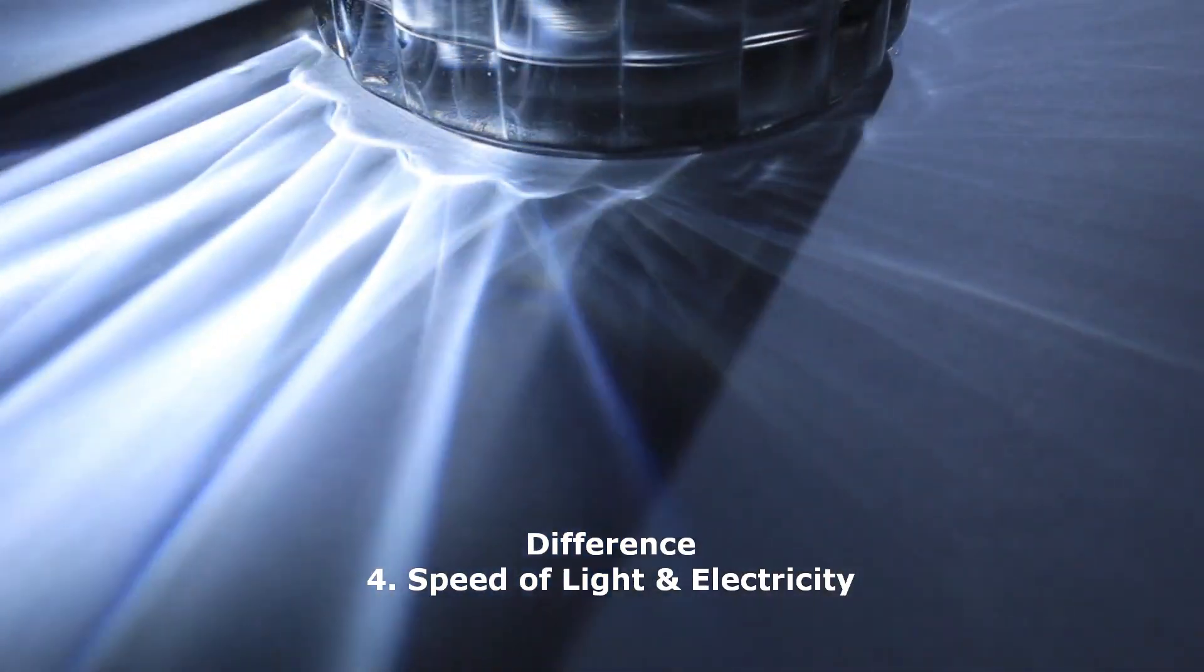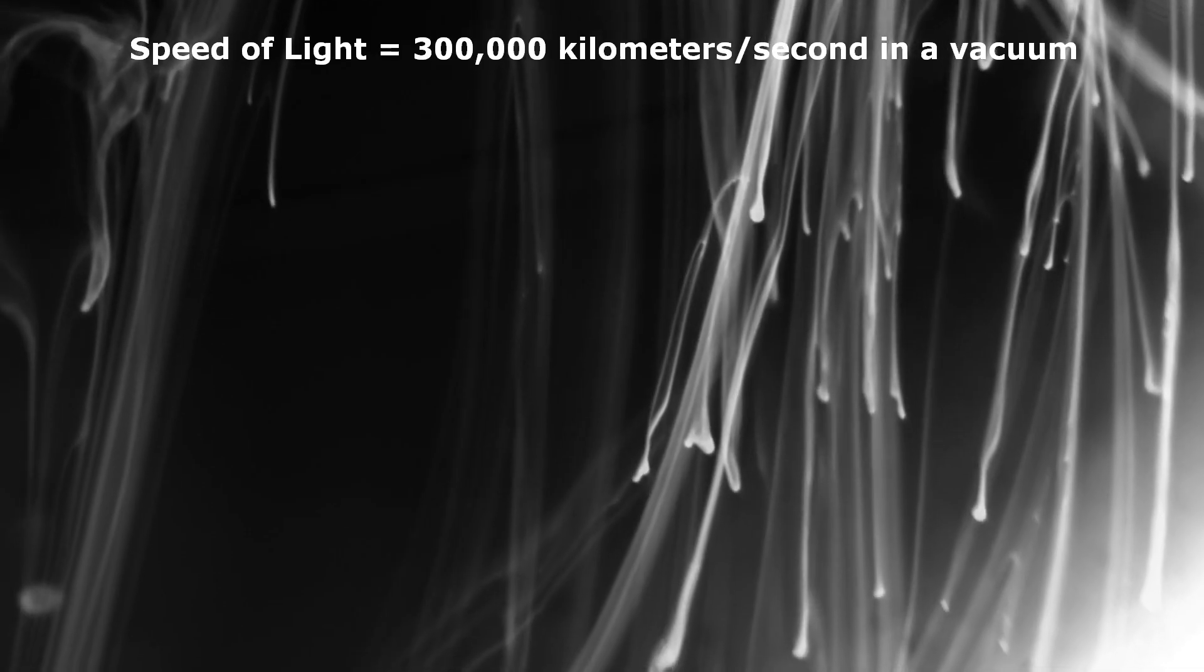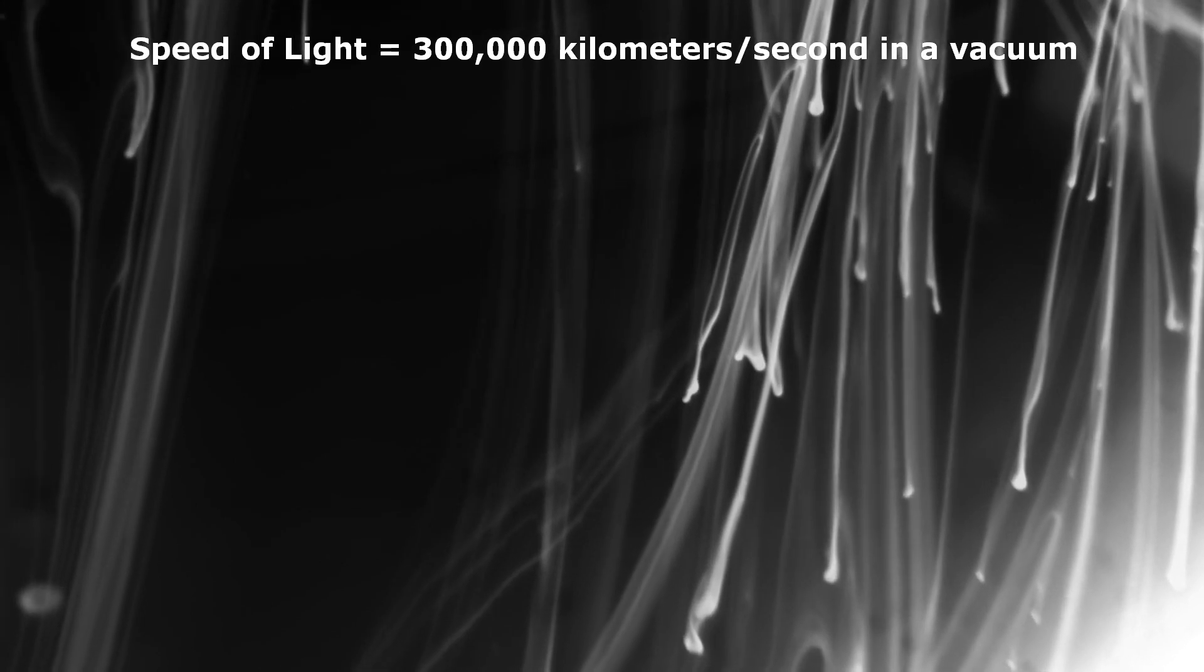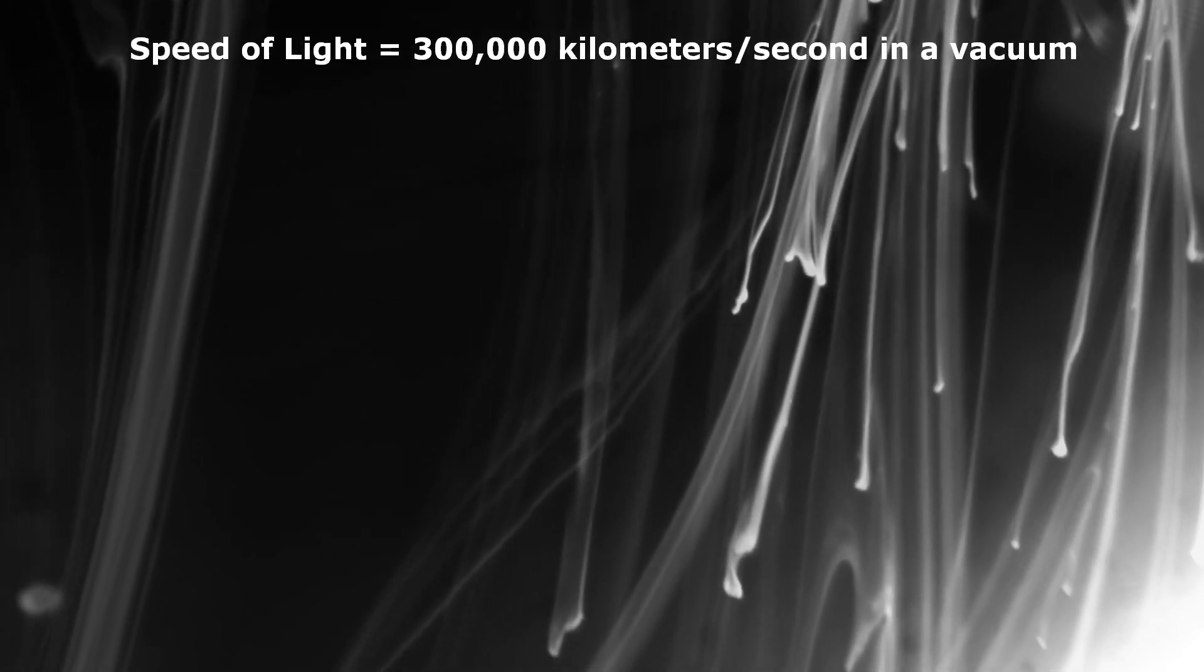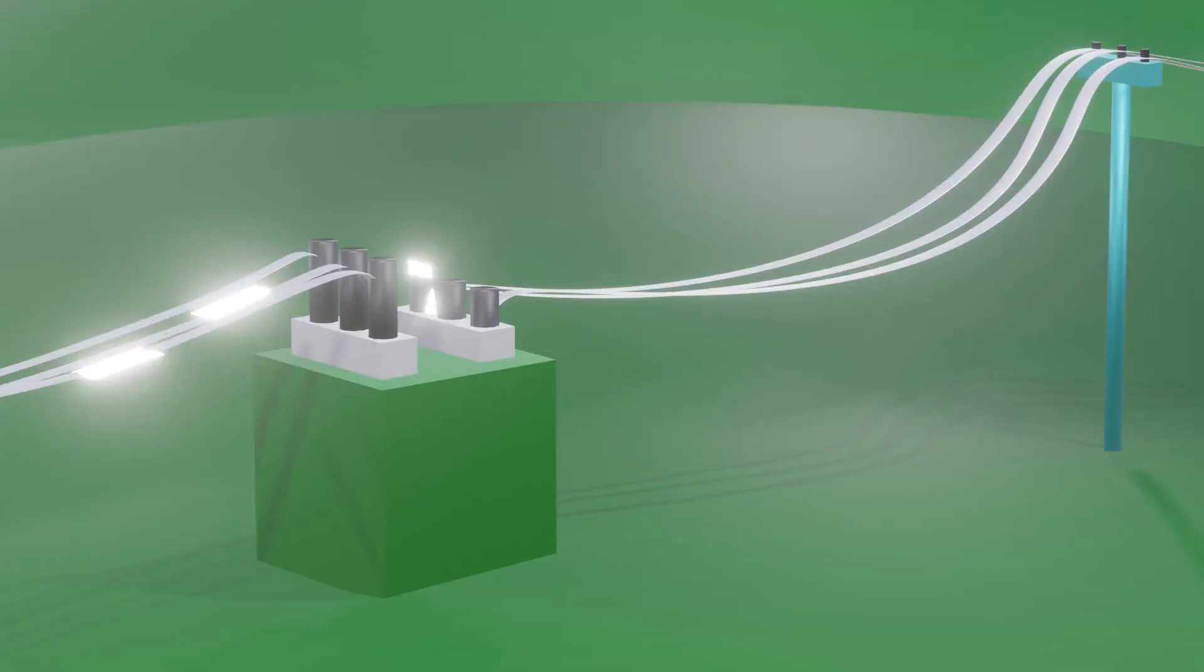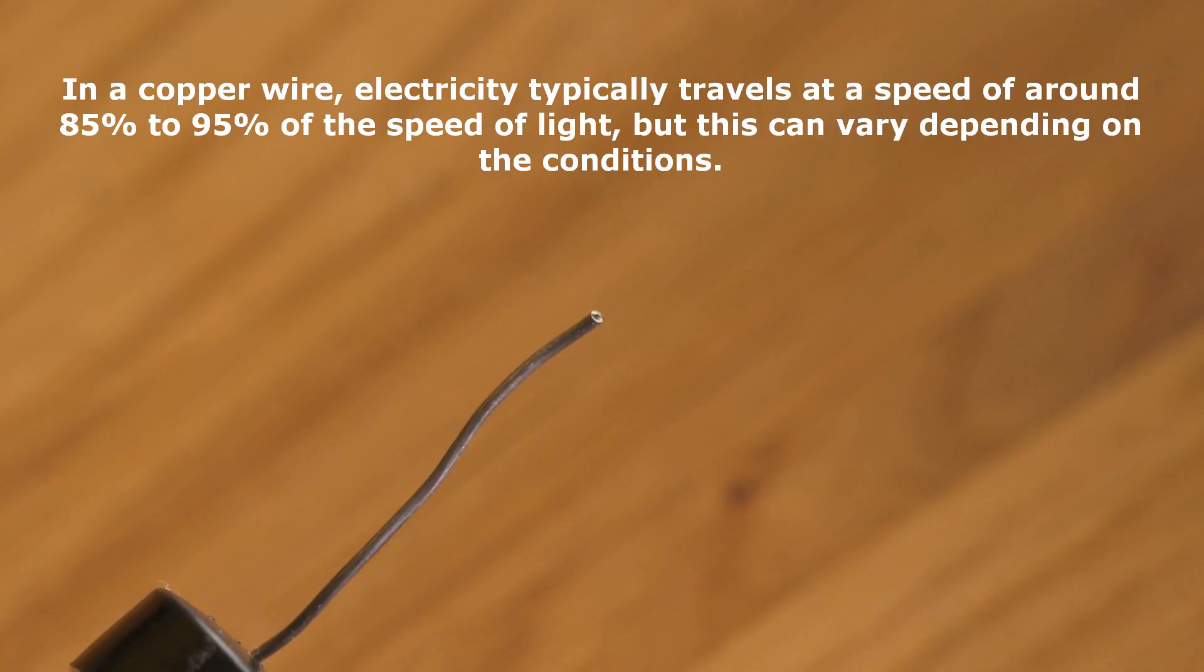A fourth difference between light and electricity is their speed. Light travels at a constant speed of 300,000 km per second in a vacuum, while the speed of electricity depends on the medium it is traveling through. For example, in a copper wire, electricity typically travels at a speed of around 85% to 95% of the speed of light, but this can vary depending on the conditions.